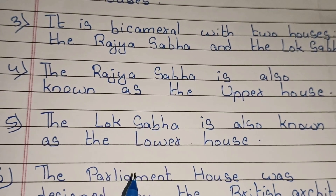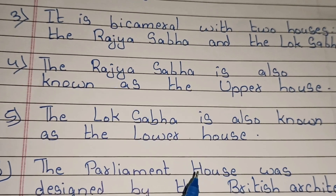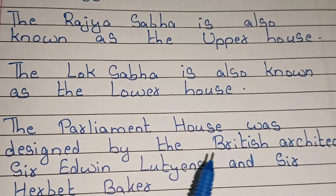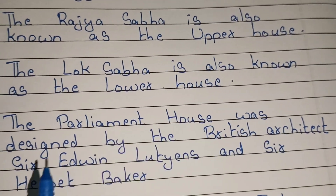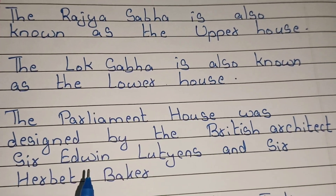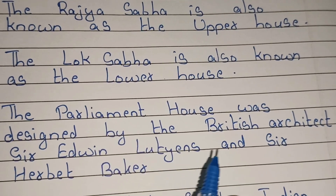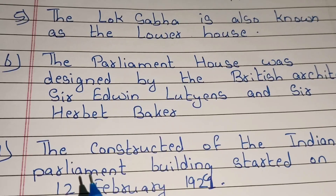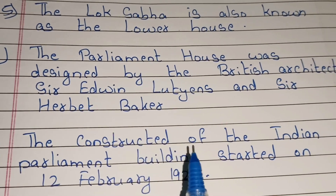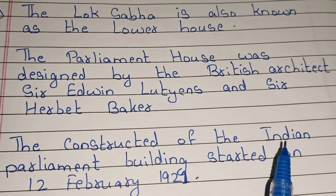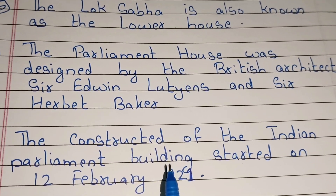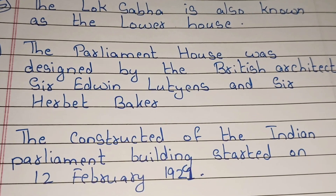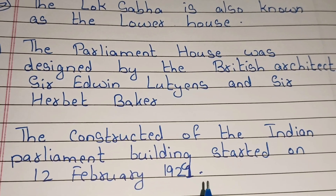The Parliament House was designed by the British architects Sir Edwin Lutyens and Sir Herbert Baker. The construction of the Indian Parliament Building started on 12 February 1921.